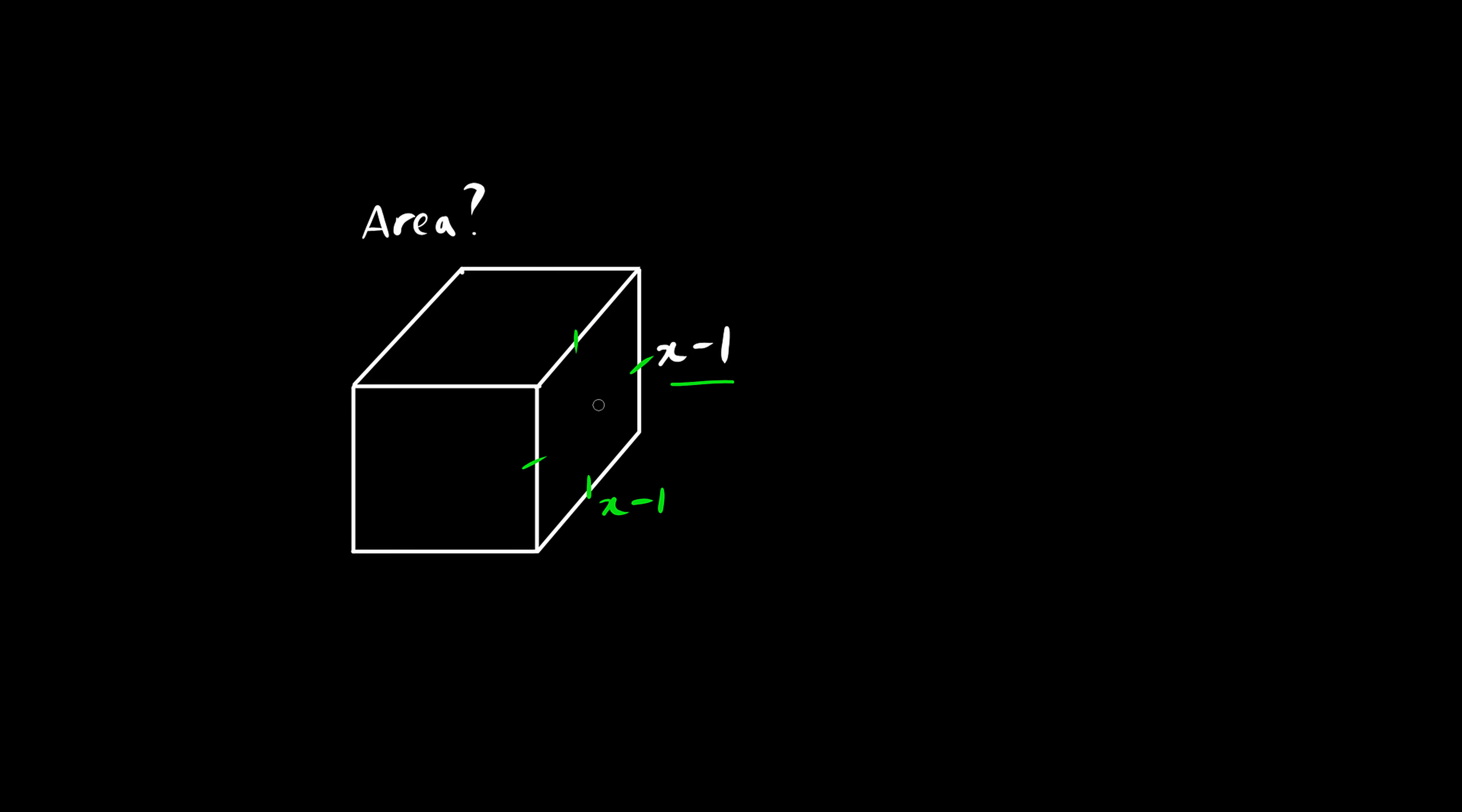So the area of one side is going to be x minus 1, and we multiply by x minus 1, that's one square, and we multiply by 6 because there are six sides to a cube. Do not mix up the surface area formula with the volume formula.